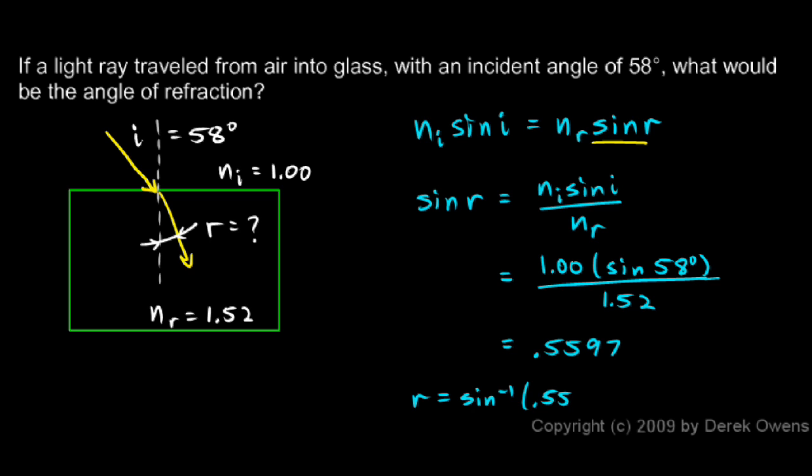And that should be a 79 right there—0.5579. So r is the inverse sine of 0.5579, and you punch that into the calculator and it comes out to 33.9 degrees. And that's the angle of refraction that we were trying to find.